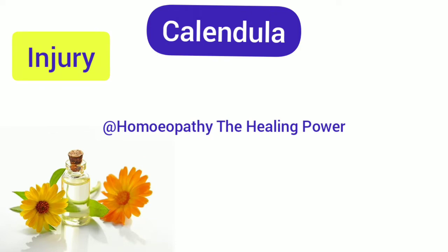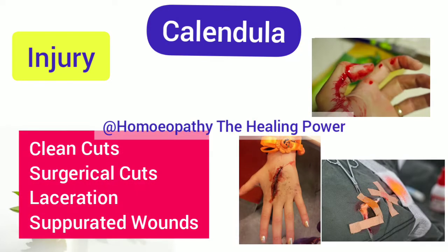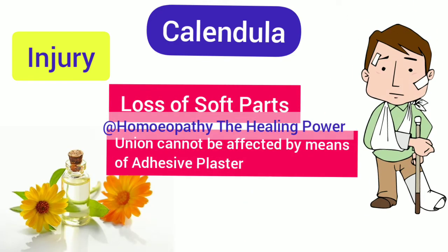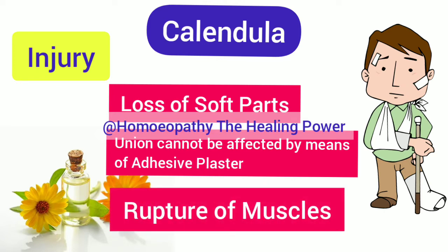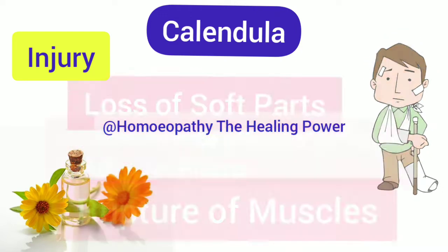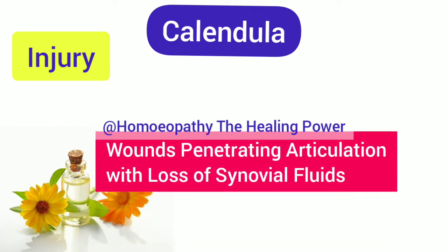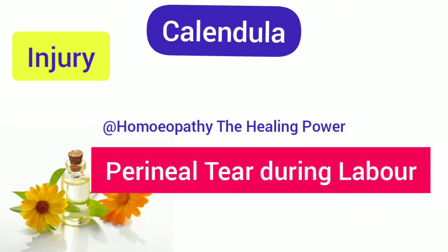Calendula in injury: Calendula is specific for clean cuts, surgical cuts, lacerated wounds, and separated wounds. Also in cases of injury where there is loss of soft parts, when union cannot be achieved by adhesive plasters, rupture of muscles and tendons, laceration in wounds penetrating the articulation with loss of synovial fluids, and it is also useful in perineal tears occurring during labor.